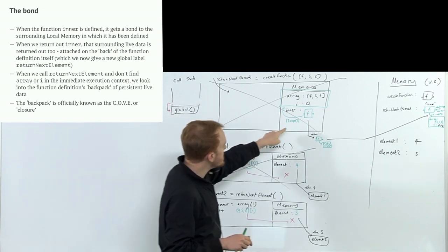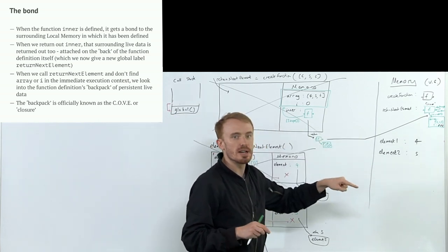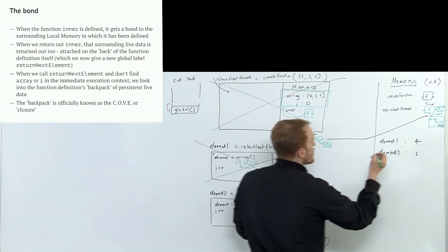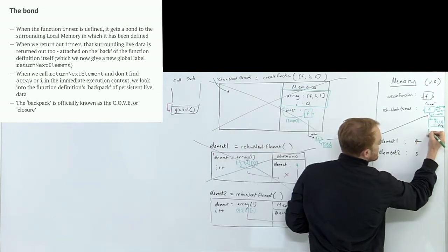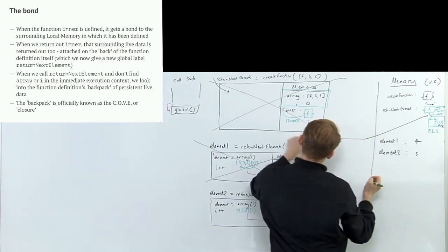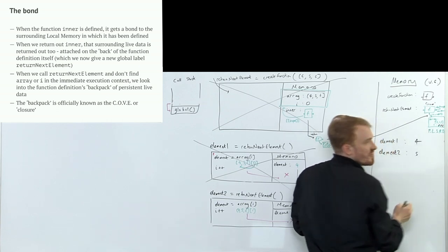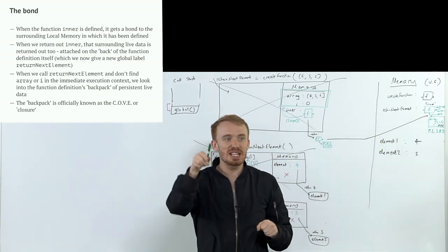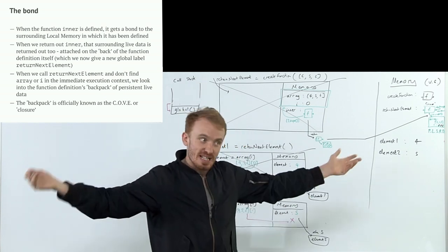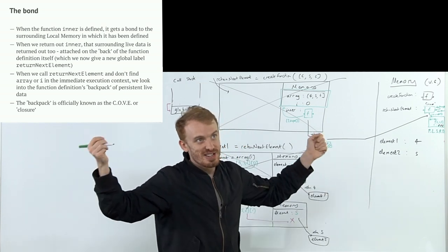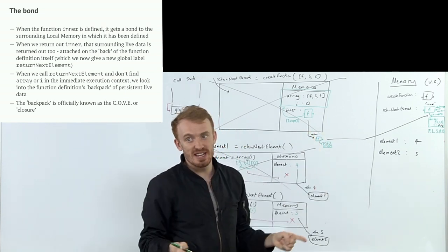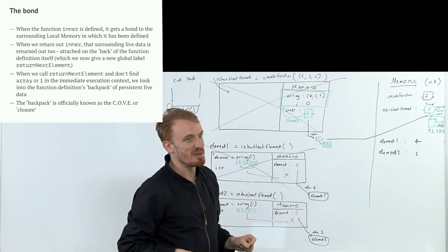We can call this backpack of data - want to be really fancy? - we can call it a persistent lexical scope. This is our lexical scope bond or reference. Persistent lexical scope referenced data. Very catchy. Persistent lexical scope referenced data. It's very literal. Go and say that in your senior engineering interviews. I'll be very happy with you.